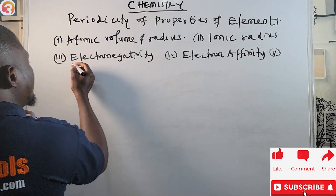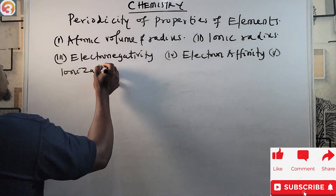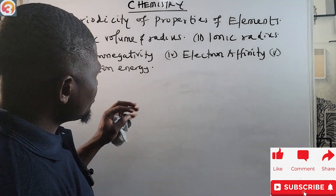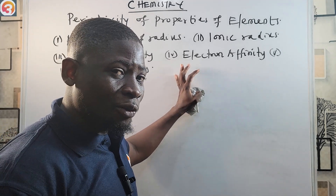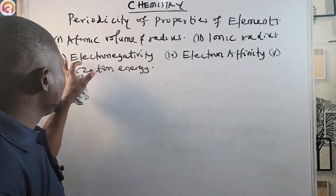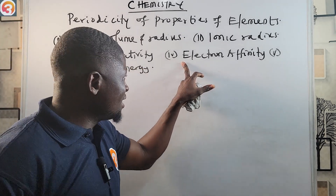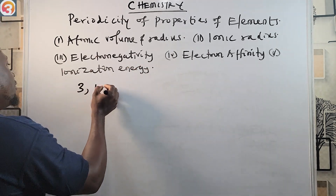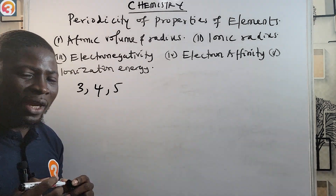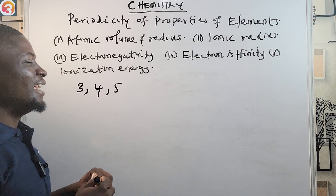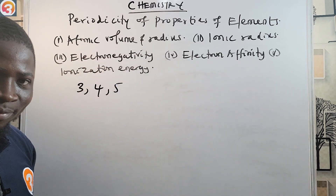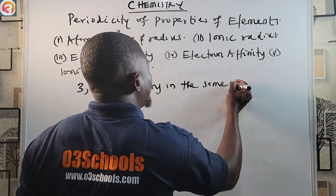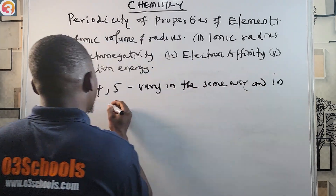Now that we've seen these five properties, the reason to know them in order is that numbers three, four, and five — electronegativity, electron affinity, and ionization energy — they vary in the same way, and in the opposite direction to numbers one and two.